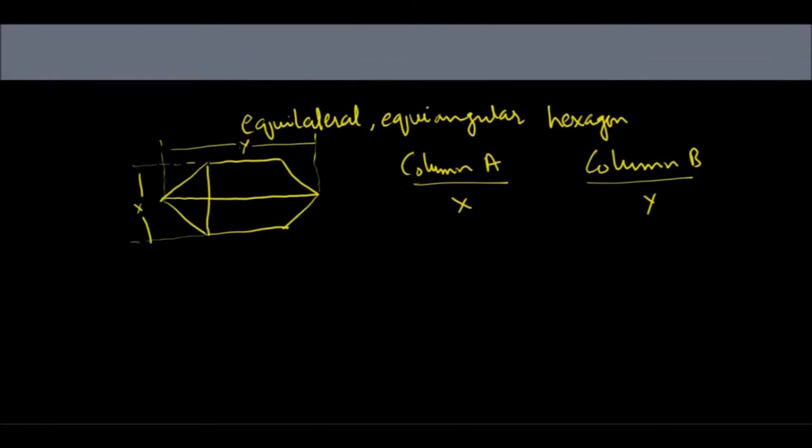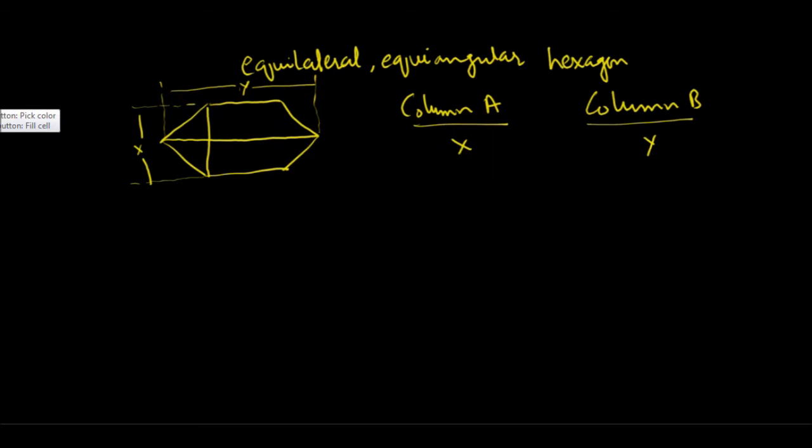Let's look at an example similar to an actual GRE problem. We have an equilateral, equiangular hexagon (n = 6). Equilateral and equiangular means it's a regular hexagon: all sides are equal and all angles are equal. There's a length x and a length y going from opposite vertices. Looking at the figure, it seems y is bigger, but we still need to prove which side is longer.